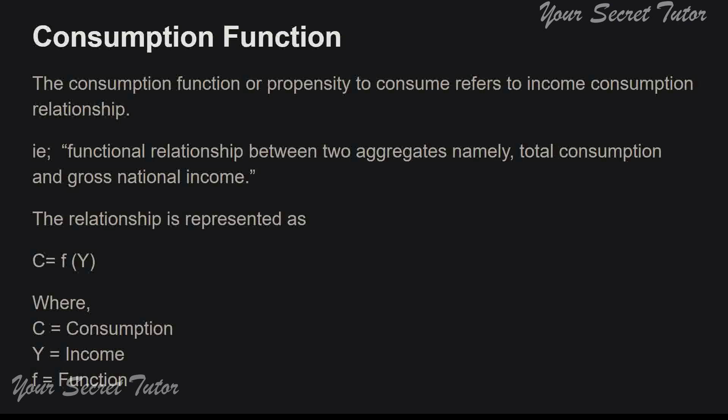It is a functional relationship between two aggregates — that is, macro values. Those two aggregates are total consumption and gross national income. Gross national income is the national income. So it is the functional relationship between total consumption and national income that we call the consumption function.